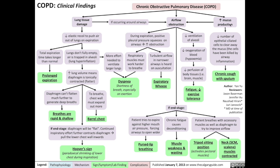COPD results in increased mucus production in the airways, which further contributes to airflow obstruction. In addition, because the chronic inflammation associated with COPD has reduced the number of epithelial ciliated cells that normally function to clear away the mucus, the mucus is allowed to build up inside the airways of COPD patients. Ultimately, the patient needs to clear the mucus, resulting in chronic cough with sputum production.